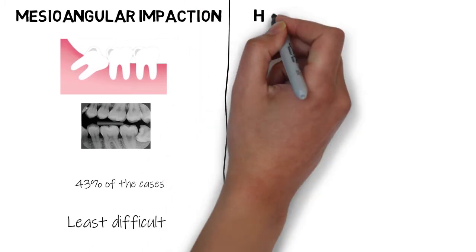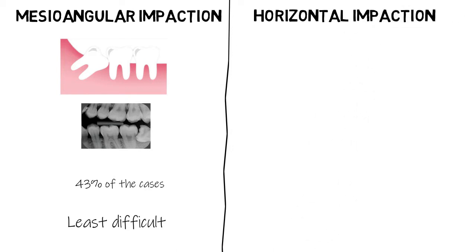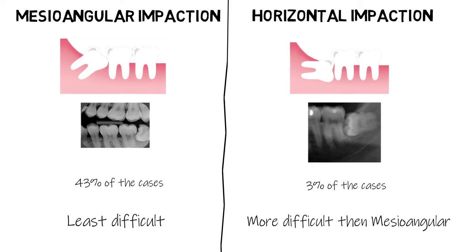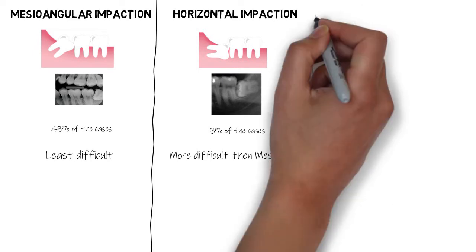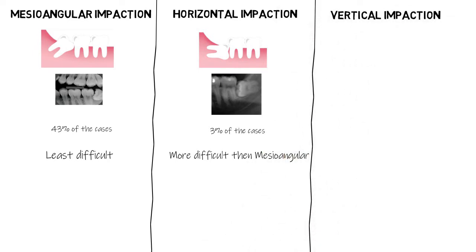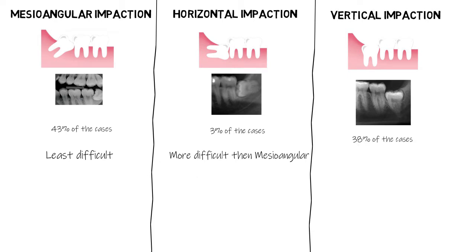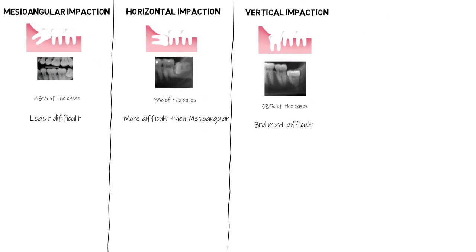The second is the horizontal impaction, in which the impacted tooth is perpendicular to the long axis of the adjacent second molar. This accounts for approximately 3% of the total lower third molar impaction cases and it is more difficult to perform extraction on. The third classification is the vertical impaction, in which the impacted tooth is parallel to the long axis of the adjacent second molar. Vertical impaction accounts for about 38% of the total cases and is the third most difficult to perform extraction on.